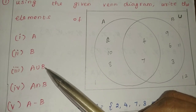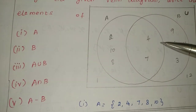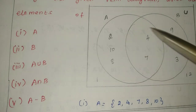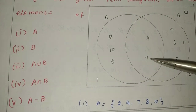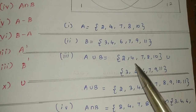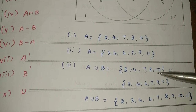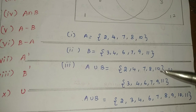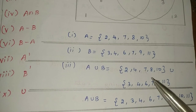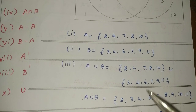Now we will see A union B. Union means all elements combined. All A values and all B values are unioned together. We list all elements of A and B in numerical order: 2, 3, 4, 6, 7, 8, 9, 10, 11. Repeated values are written only once in the union.